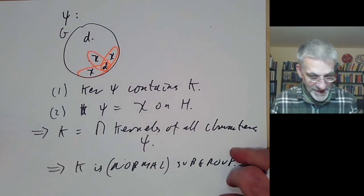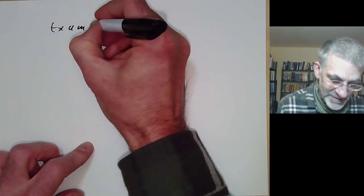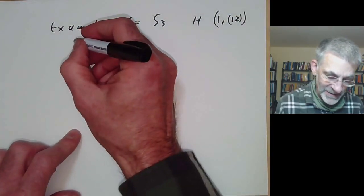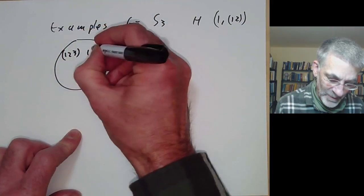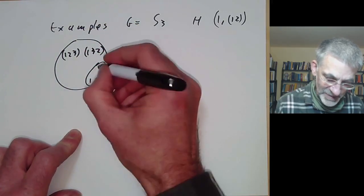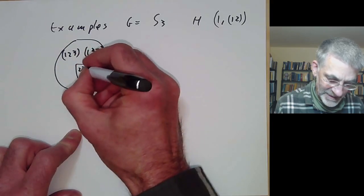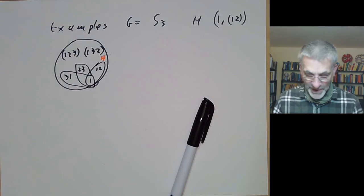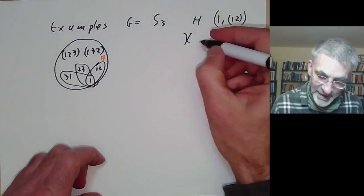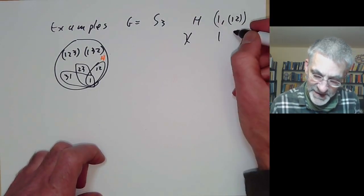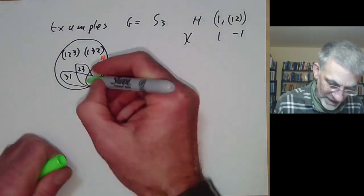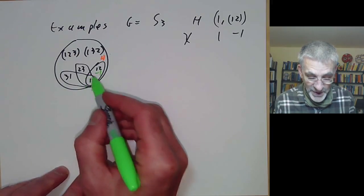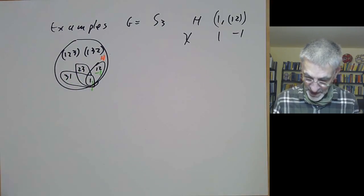As an example, let's see what happens for the symmetric group S3. Take G = S3, H = {1, (1 2)}. In the picture of S3, the elements (1 2 3) and (1 3 2) will be K; the subgroup H contains 1 and (1 2), a conjugate contains (2 3), and another contains (3 1). These are the three conjugates of H. We take the non-trivial character χ of H, which has values 1 on the identity and −1 on (1 2). If we induce it, its value is 3 on the identity and −1 on the three transpositions.